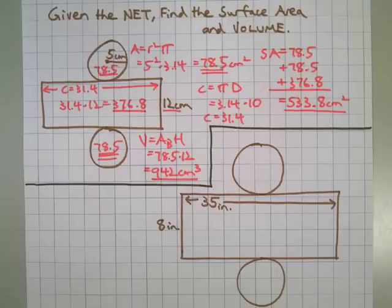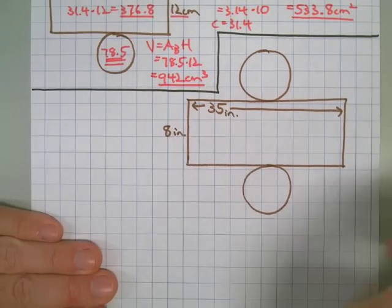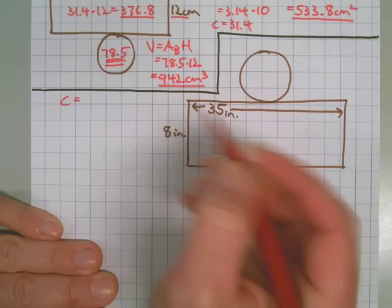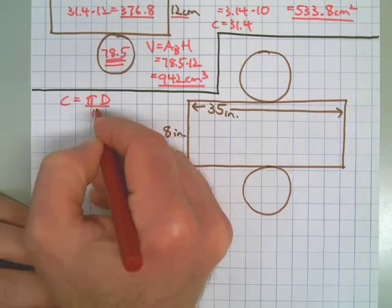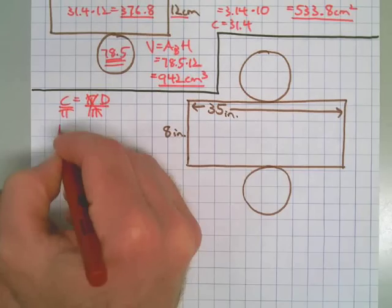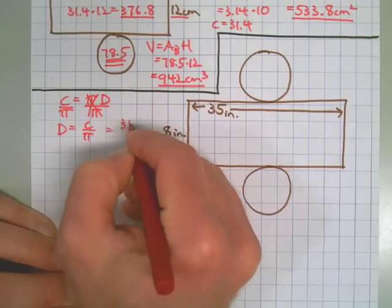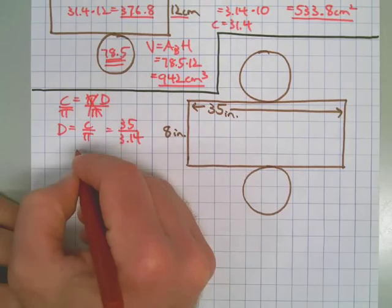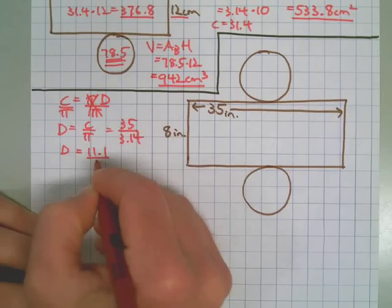This is officially the longest video ever — by me — so I hope you're still awake. We have one more problem. This time we're not given the radius or the diameter; we need to find it. Since circumference equals pi times diameter, we can rearrange this equation: diameter equals circumference divided by pi. So diameter equals 35 divided by 3.14. Then we divide by 2 to get the radius.